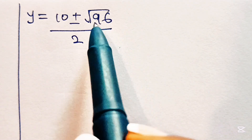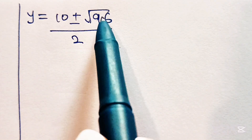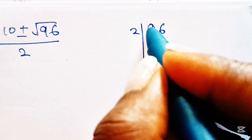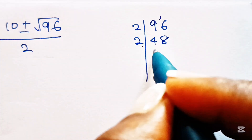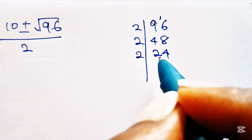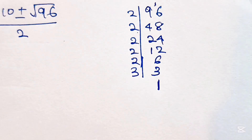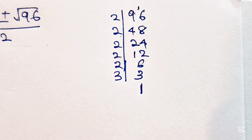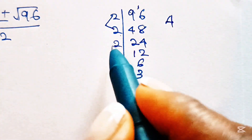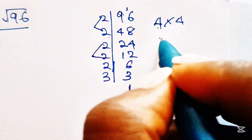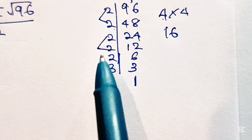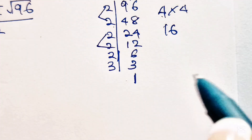Now the square root of 96 is the same as the square root of 16 multiplied by 6. Let me show you how to get that. We factorize 96 by dividing with the smallest number possible: 96 divided by 2 is 48, divided by 2 is 24, divided by 2 is 12, divided by 2 is 6, divided by 2 is 3, divided by 3 is 1. We bring out our perfect squares: 2 times 2 gives 4, and 2 times 2 again gives another 4, so 4 times 4 gives 16. The remaining numbers, 2 times 3, give us 6. So we have 16 times 6, and root 96 equals root 16 times root 6.